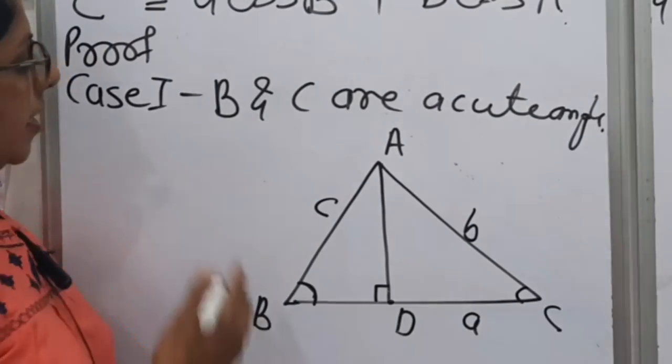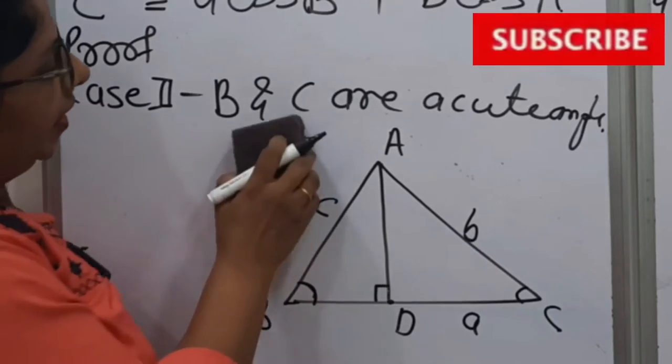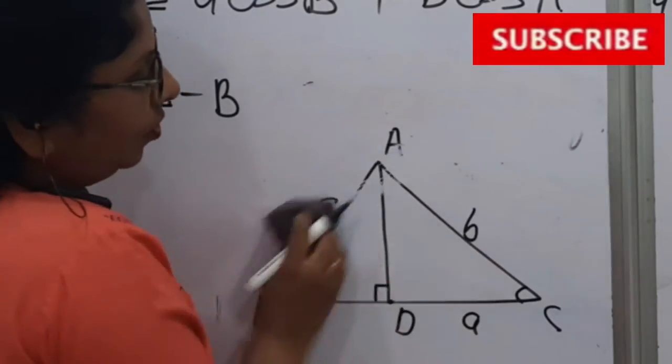This is case 1. Now we will discuss case 2, in which we will take B as an obtuse angle.